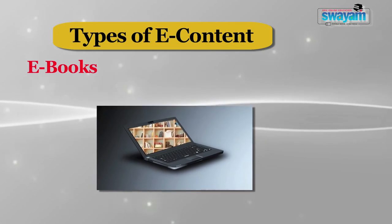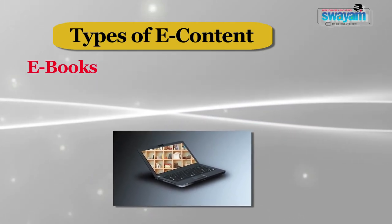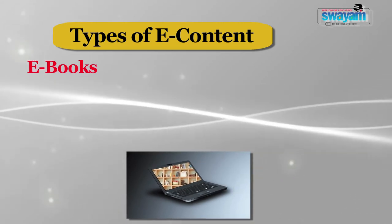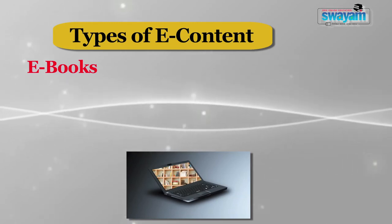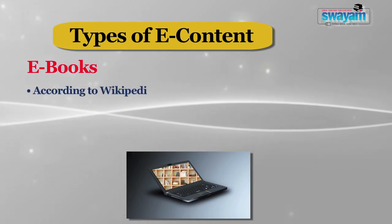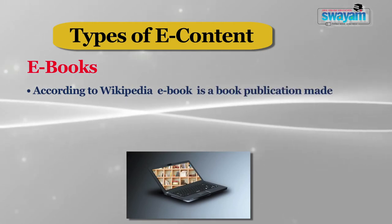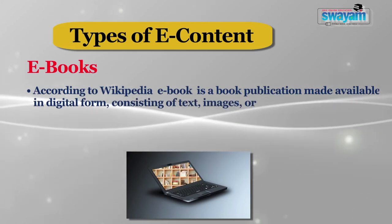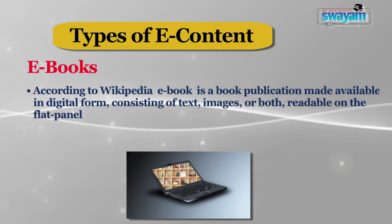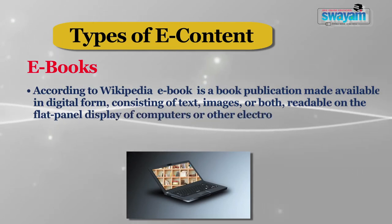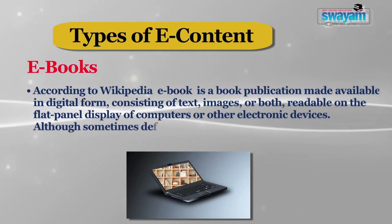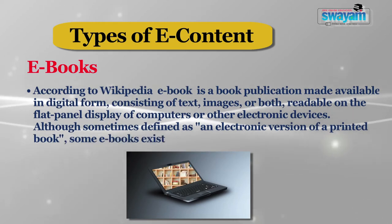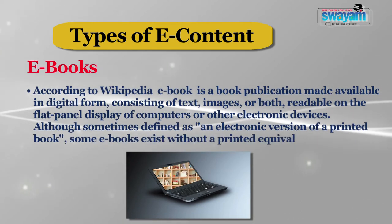E-books are also another type of e-content. They are digitized versions of books and are becoming increasingly popular because of ease of access and availability. According to Wikipedia, an e-book is a book published and made available in digital form, consisting of text, images or both, readable on a flat panel display of computers or any other electronic device. Although sometimes defined as an electronic version of a printed book, some e-books exist without a printed equivalent — they are only available as e-books.